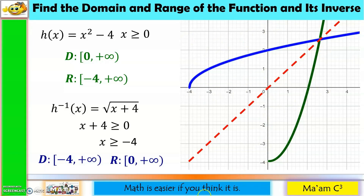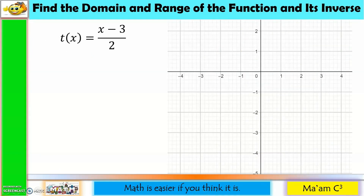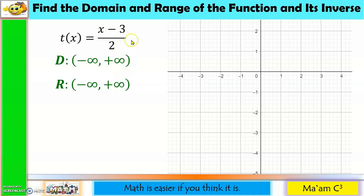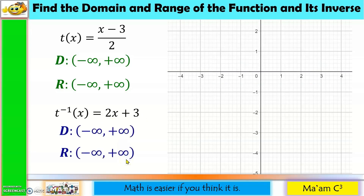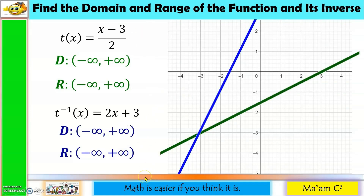Next: t(x) = (x − 3)/2, a rational function with a constant denominator. Its domain and range are both the set of all real numbers. Its inverse is 2x + 3, a polynomial function, also with domain and range of all real numbers. Graphing both with the line y = x confirms they are inverses of one another.